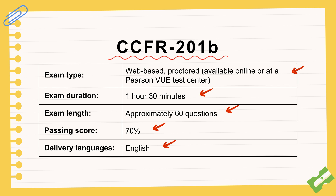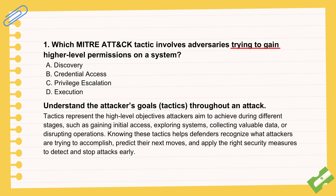These frameworks aren't just abstract ideas for tests — they're practical tools. They catalog how real attackers operate, which is essential if you're on the defense side. These practice questions give us solid, concrete examples to chew on. The first question is about an attacker trying to get higher-level permissions on a system, like moving from a normal user to an admin. The source identifies the tactic for that as privilege escalation.